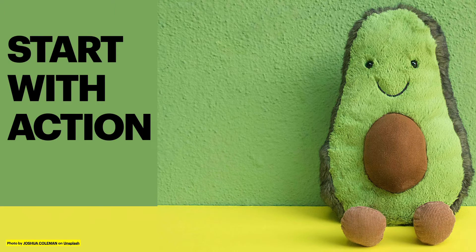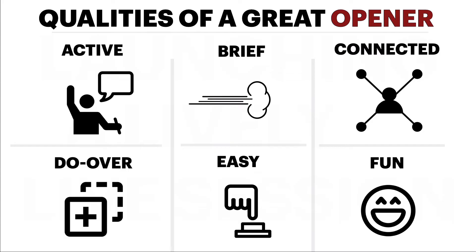The key thing I want to suggest is to start with action — do something, have people take an action, participate right from the beginning of the class. Some qualities of a great opener for a remote class: it should be something active, where people are doing something, not just watching. It should be short, connected to other things happening in the class, and ideally something you can do again so you don't have to create a new approach every single time. It should be easy for people to do, fun, and something people look forward to — setting the class off with positive momentum.